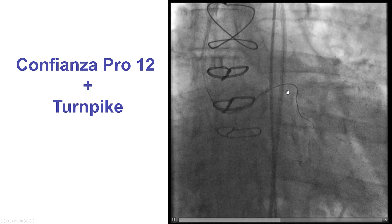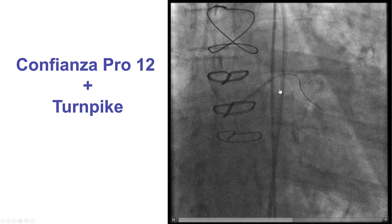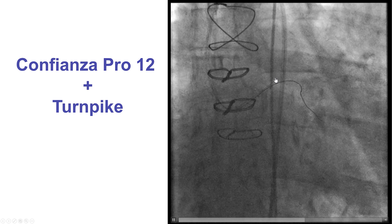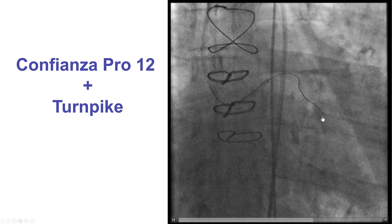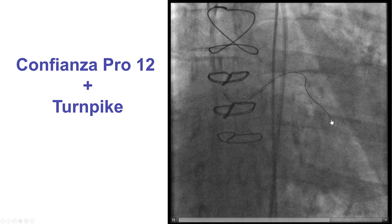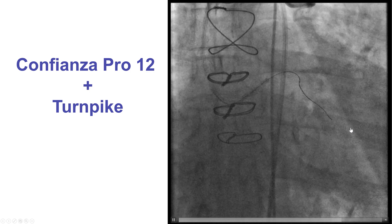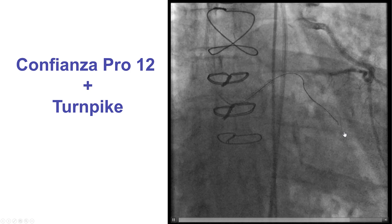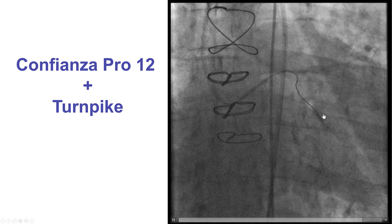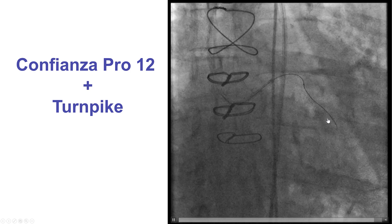We did have bilateral femoral access with an 8 French EBU on the left and a 6 French guide for the internal mammary graft. After multiple attempts, the wire did seem to follow along the course of the obtuse marginal branch, which was the main branch supplied through the epicardial collaterals. So this was a very appealing location for attempting re-entry.